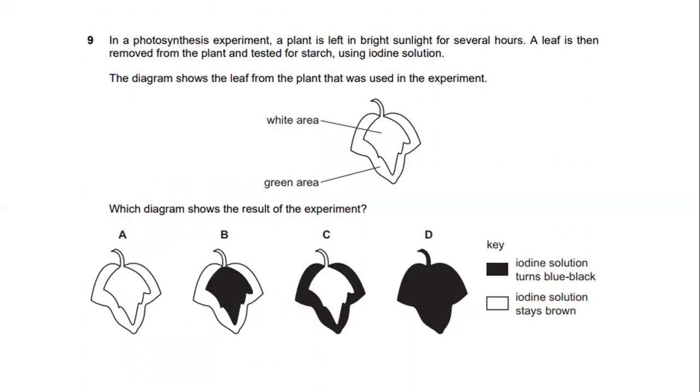In the photosynthesis experiment, a plant is left in bright sunlight for several hours. A leaf is then removed from the plant and tested for starch using iodine solution. So the diagram shows the leaf from the plant that was used in the experiment. You can see the white area is the area where does not consist of chlorophyll. What is actually the chlorophyll function? The chlorophyll function is used for the process of photosynthesis and it makes the leaf become green. If you can see this is the green area of the leaf. The green area of the leaf consists of chlorophyll which is responsible in the process of photosynthesis.